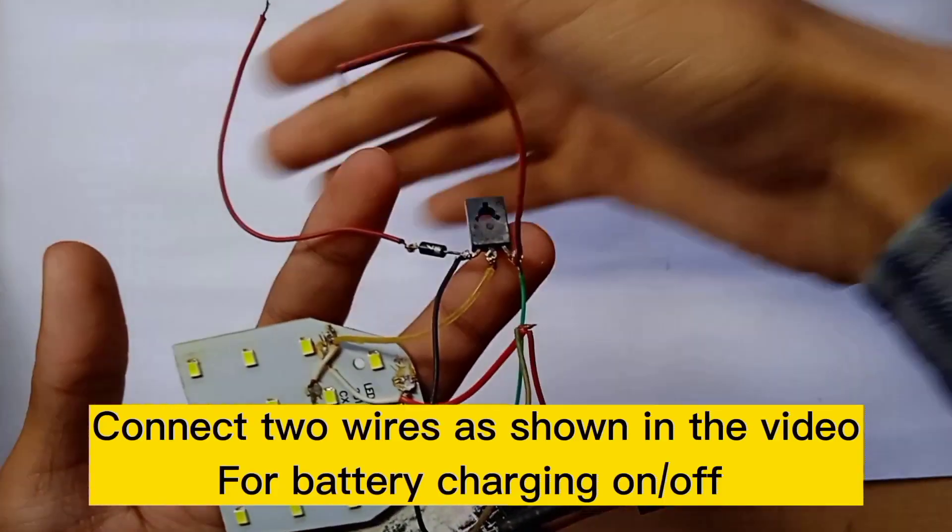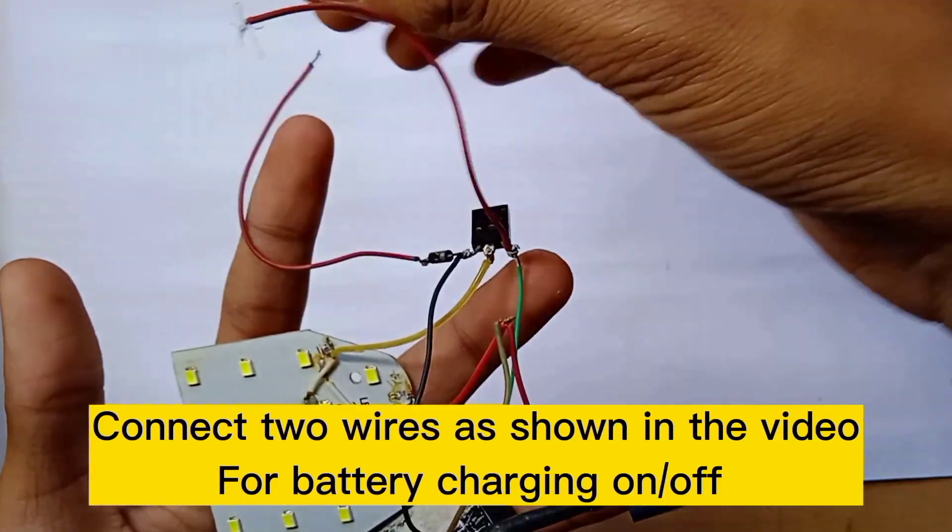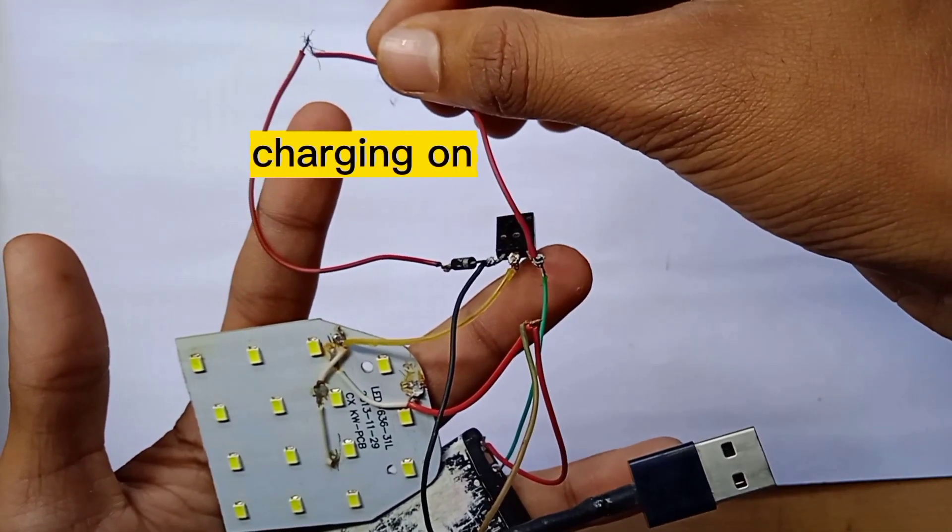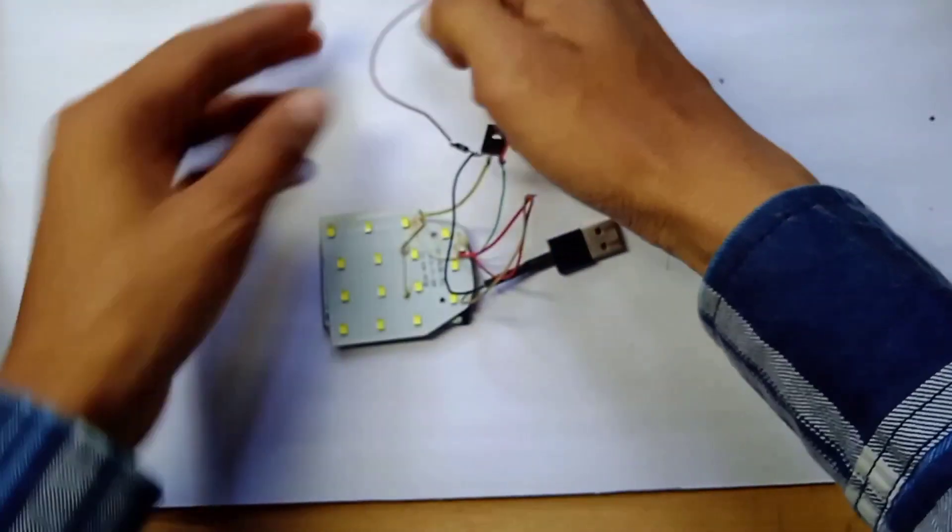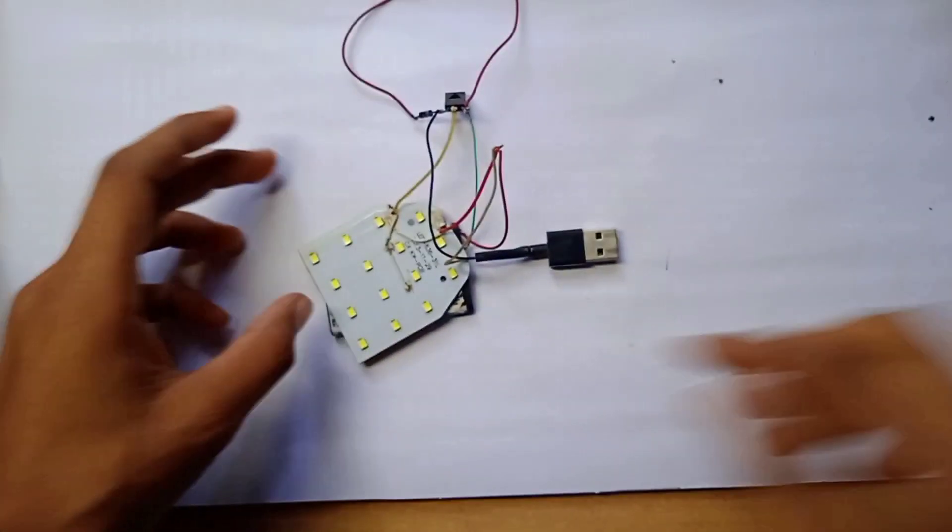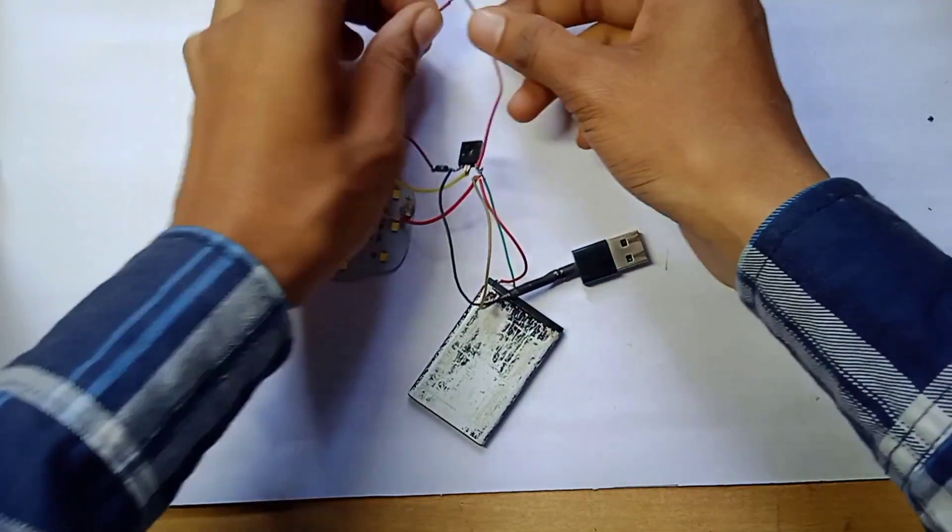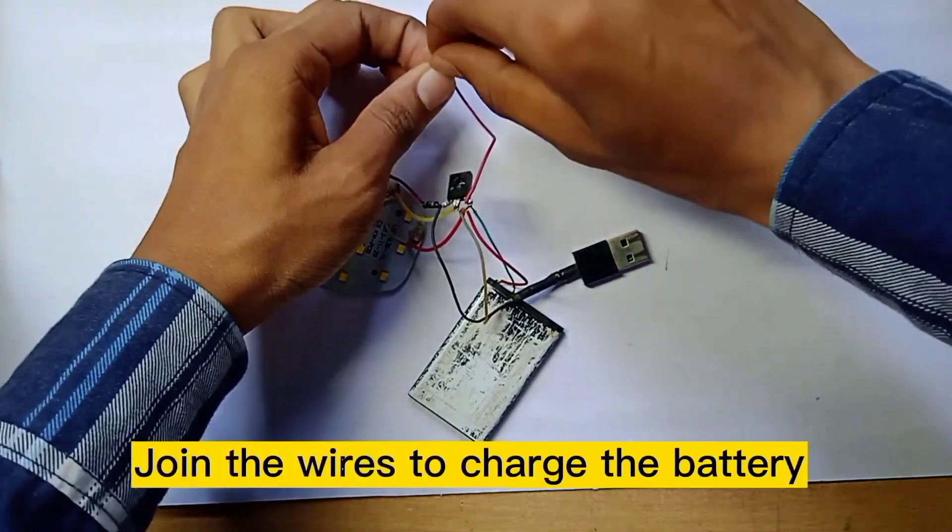Connect two wires as shown in the video for battery charging on-off. Join the wires to charge the battery.